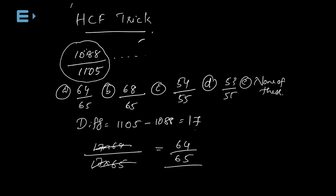64 divided by 65 — that is the first option. Now, what we are doing: we have a fraction, and we have to identify the difference. The number directly gives us the factors. We have to reduce these numbers using the HCF concept.